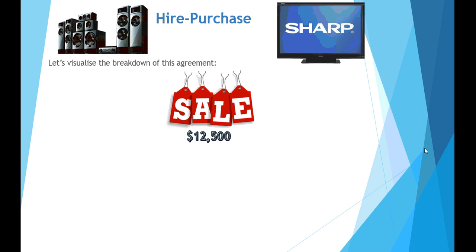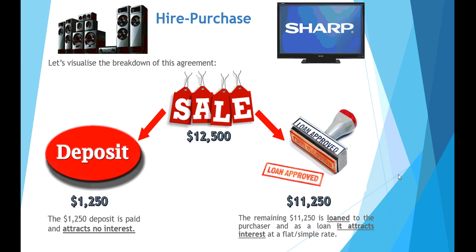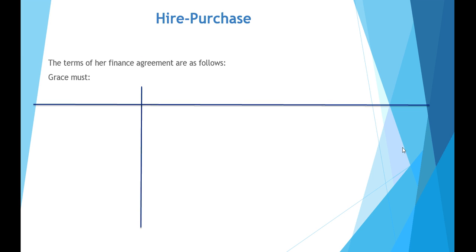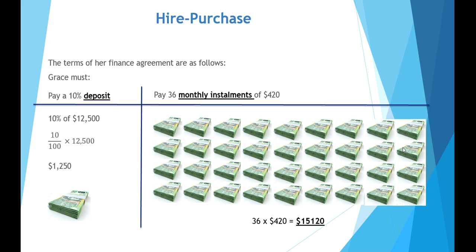In this hire purchase arrangement, the price of the goods is $12,500 and quite commonly you're required to pay something like a 10% deposit, so we'll use a deposit of $1,250. That's paid up front and there's no interest attracted on that particular amount. She then has a remainder of $11,250 that she has to loan from either the store or an institution representing the store. The terms of the agreement for Grace are a 10% deposit of $1,250 and 36 monthly installments of $420.